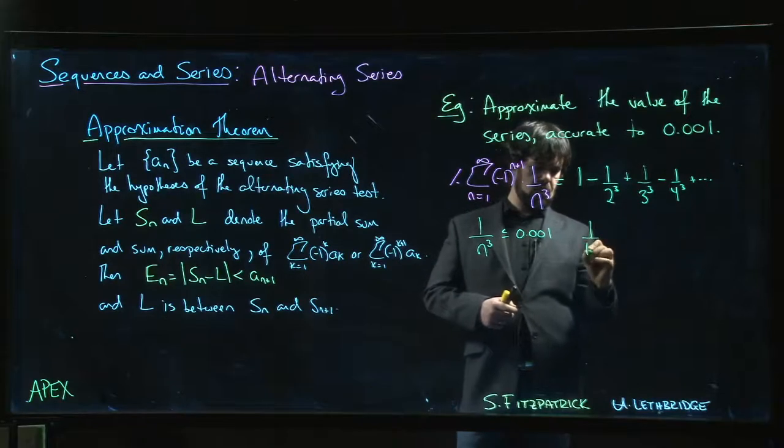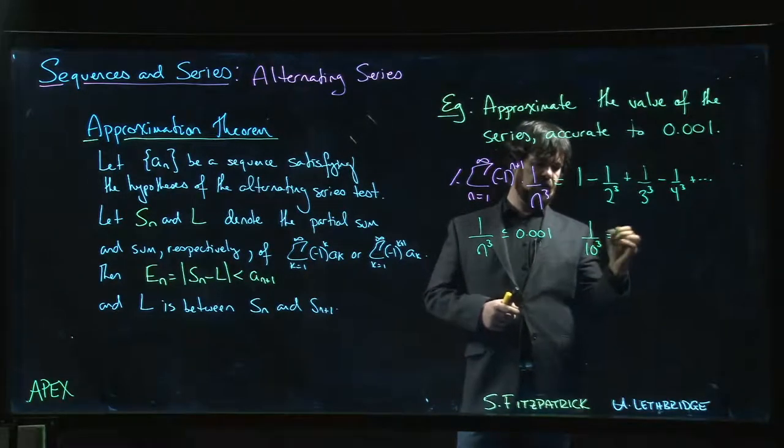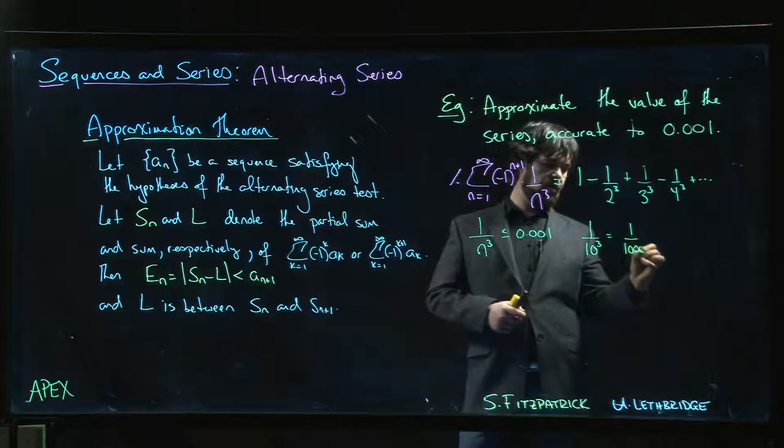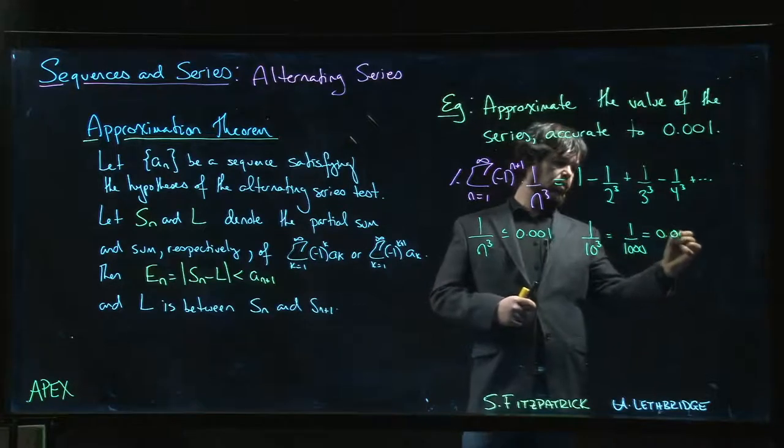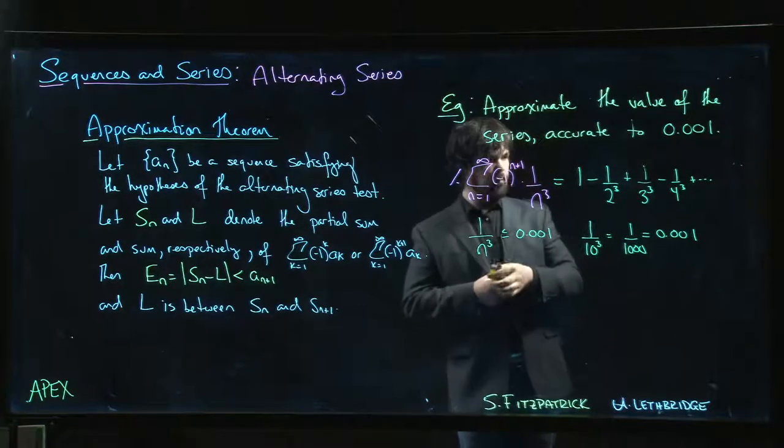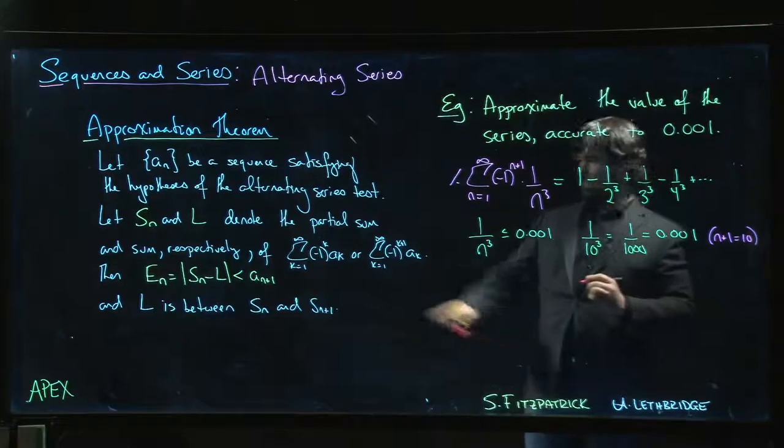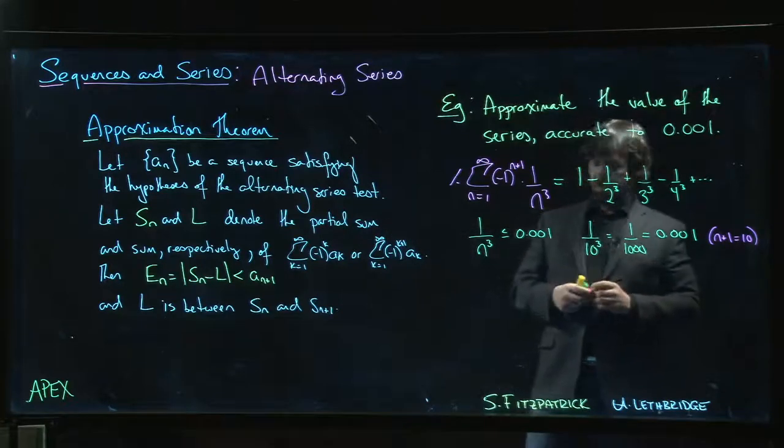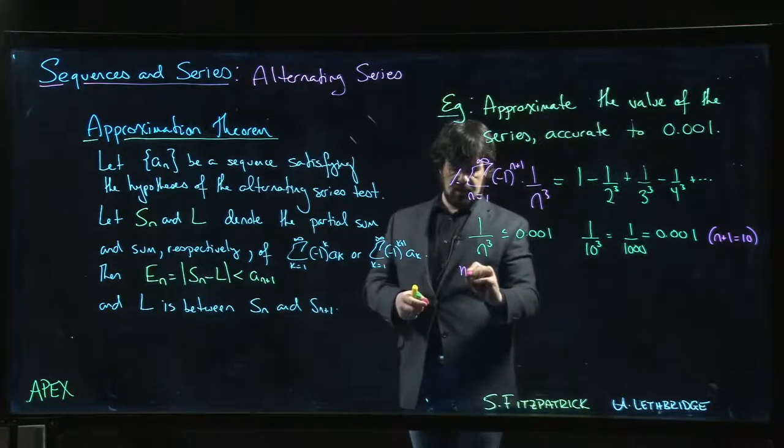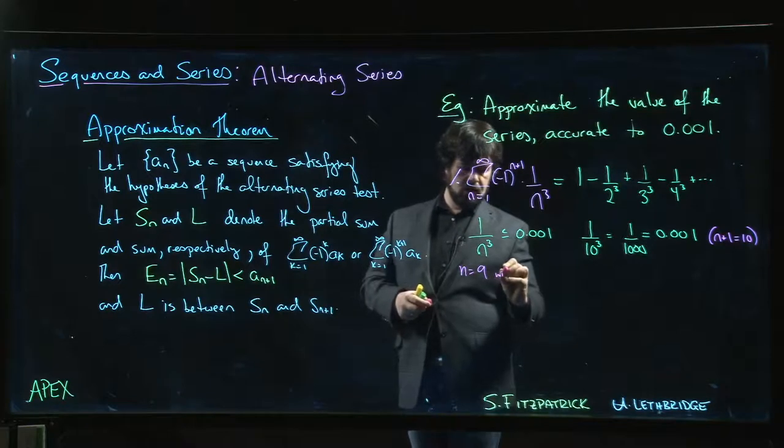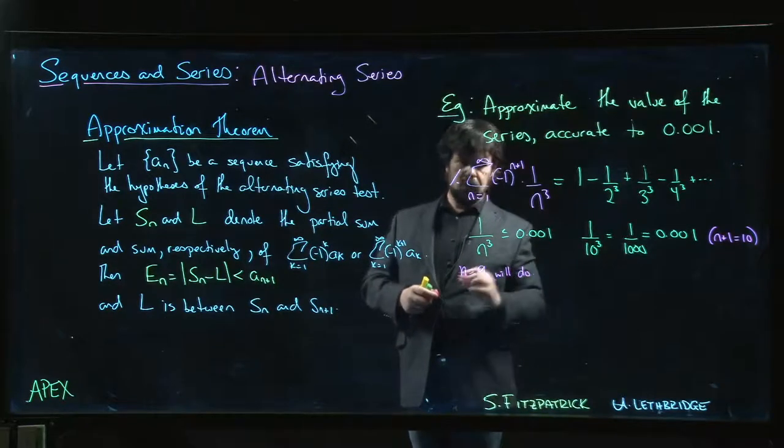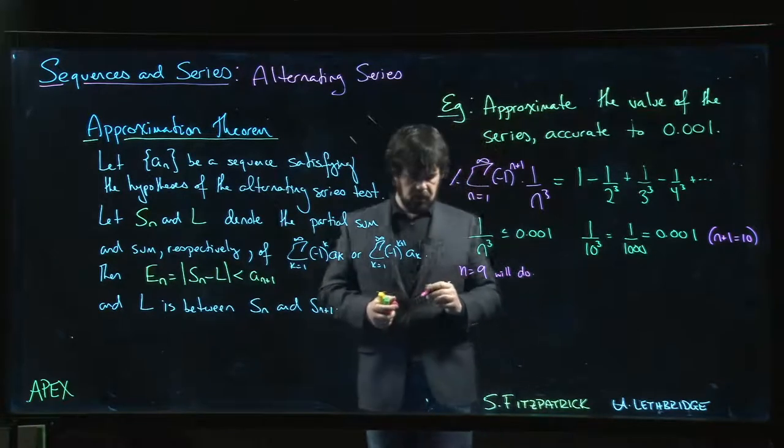Well, 1 over 10 cubed is going to do it - 10 cubed is a thousand, that's exactly 0.001. So that means we can take n plus 1 to be 10 if we want to use the notation that's over there. So that means that n equals 9 will do.